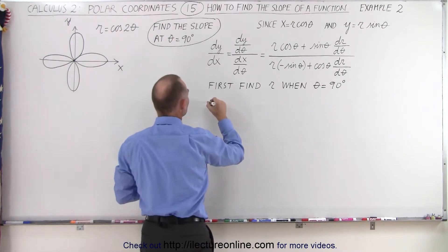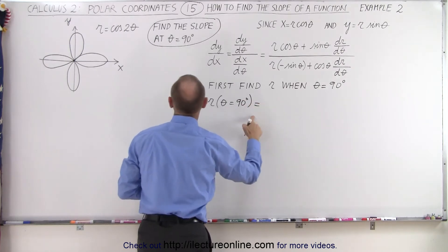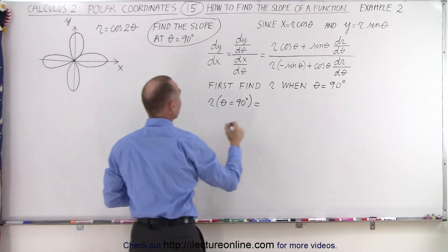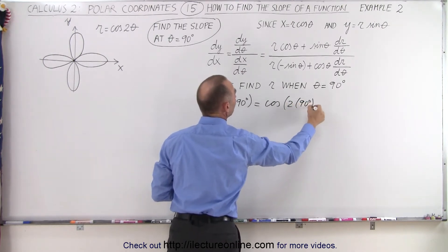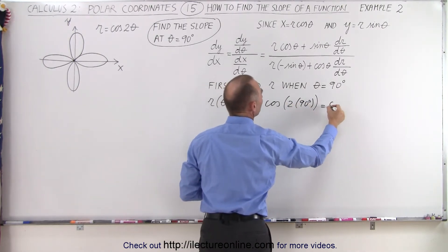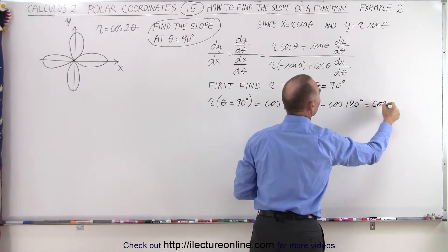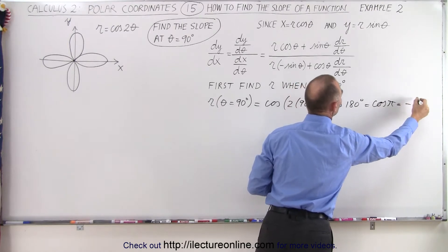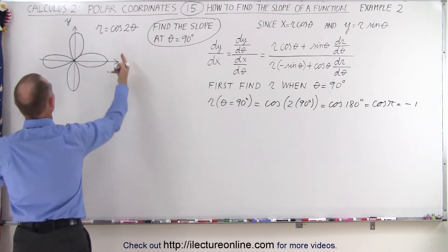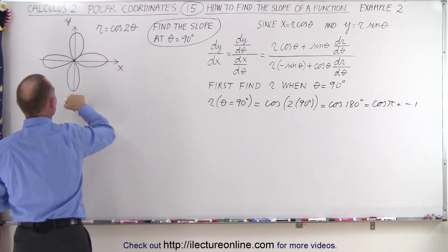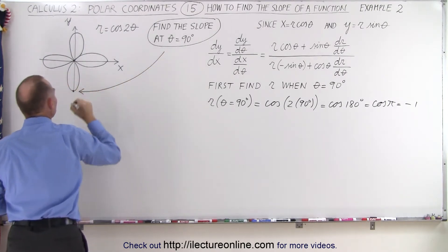So r, when theta is equal to 90 degrees, is equal to the cosine of 2 times 90 degrees, which equals the cosine of 180 degrees — the same as the cosine of pi — and that is equal to negative 1. Going back to our graph, the only place where r equals negative 1 is right here, which means we're trying to find the slope at this location.